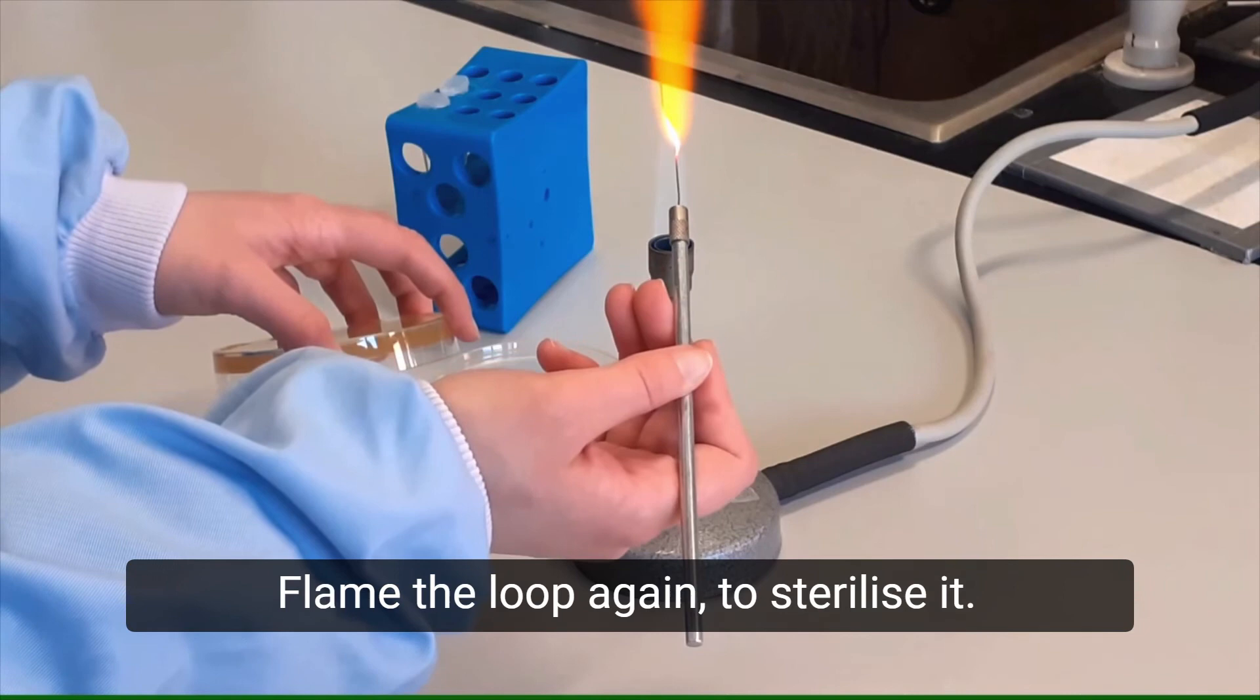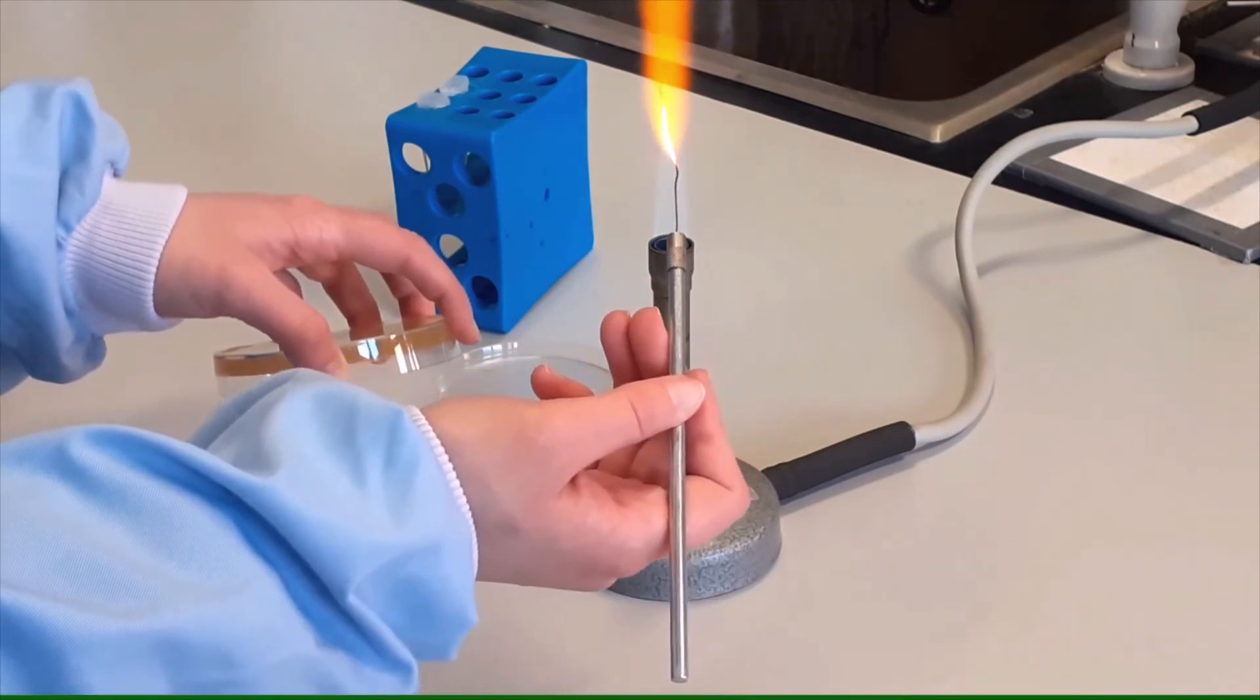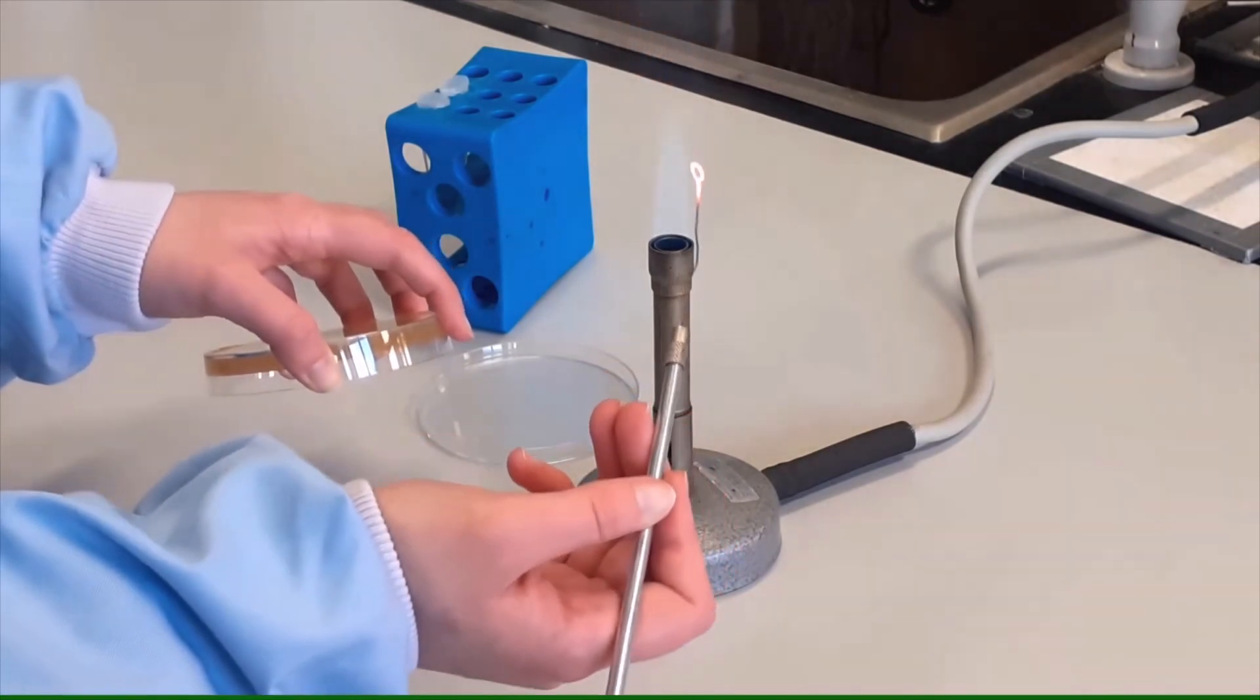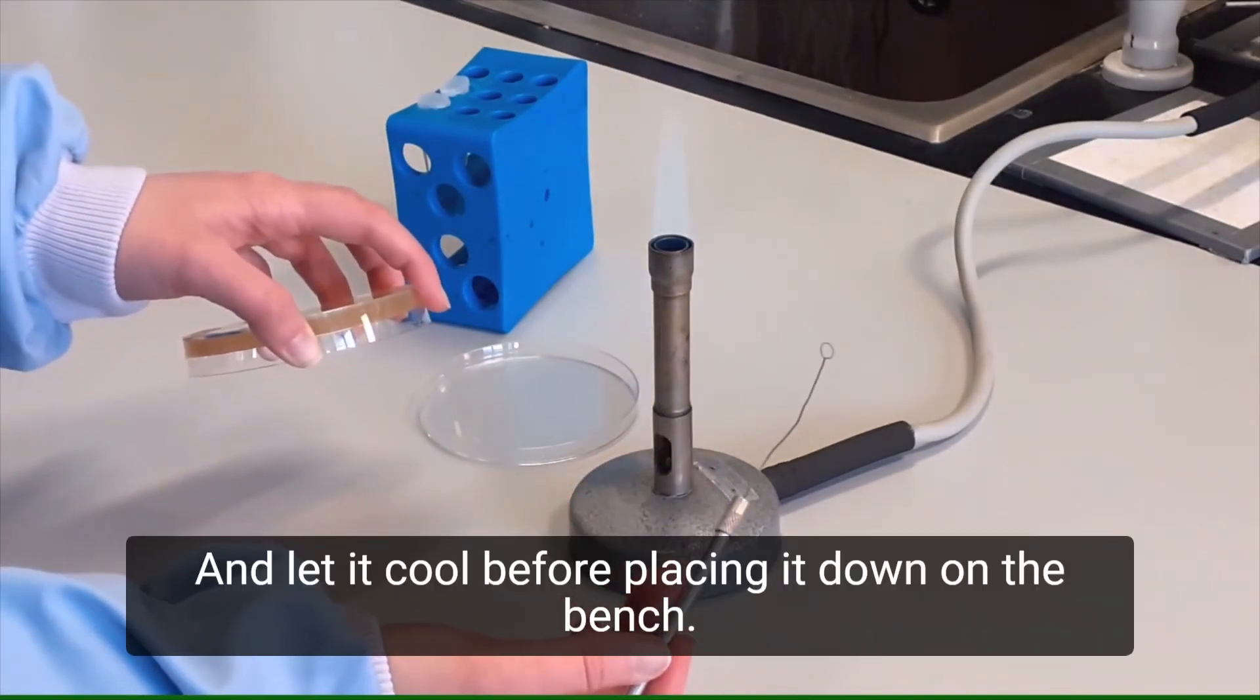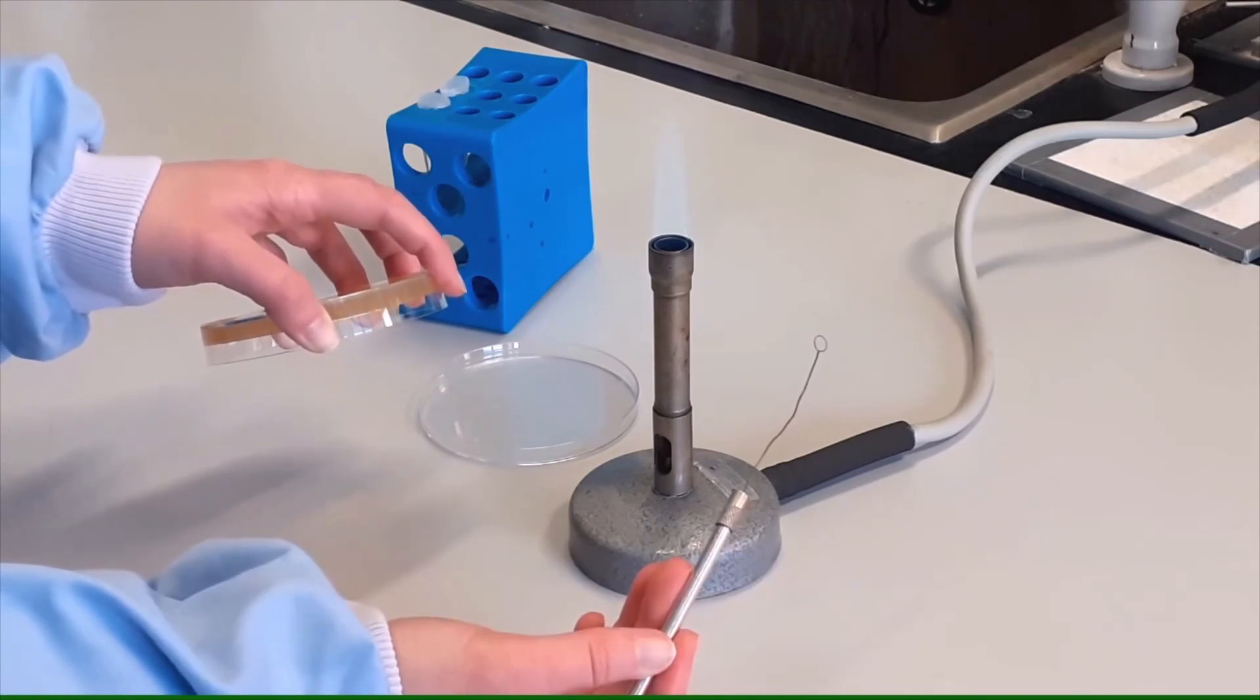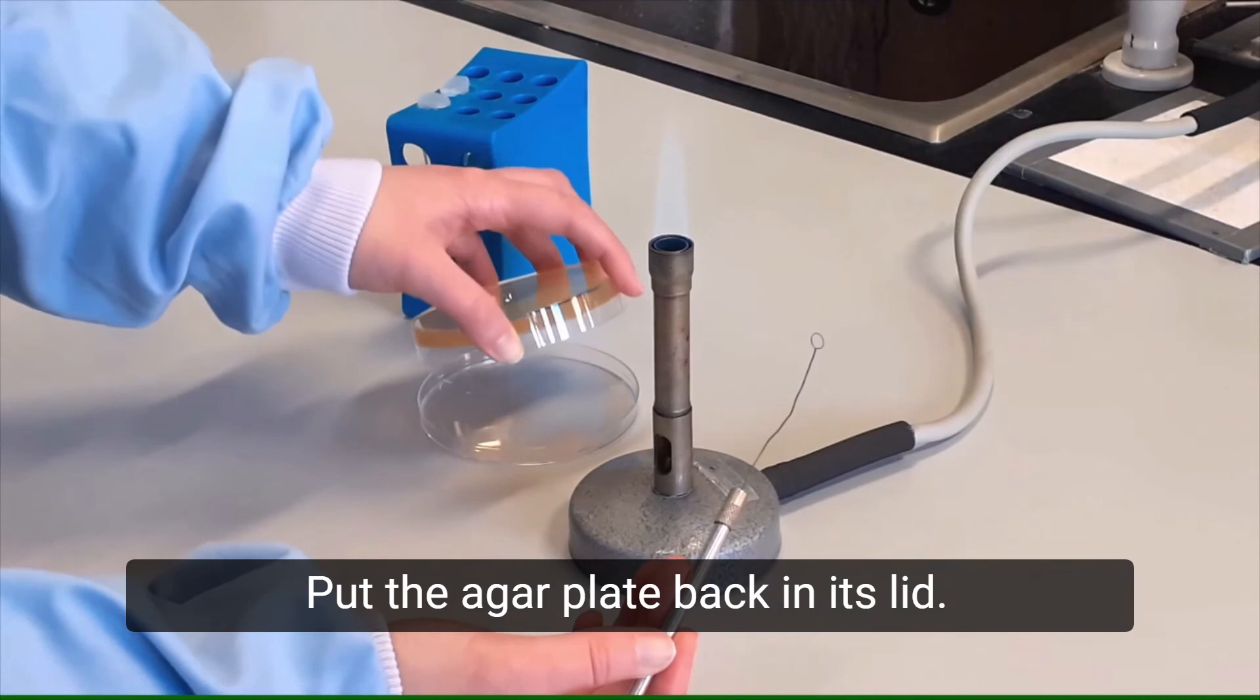Flame the loop again to sterilize it and let it cool before placing it down on the bench. Put the agar plate back in its lid.